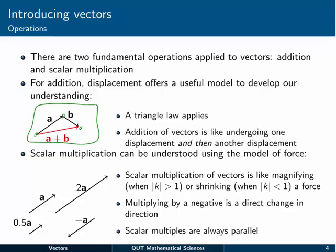A useful model for thinking about scalar multiplication is the model of force. Now, scalar multiplication of vectors is like magnifying or shrinking their magnitude, depending on what we multiply by. If we multiply a vector by a value k, which has a magnitude, or absolute value, bigger than 1, then we magnify the original vector. If the absolute value of k is less than 1, on the other hand, we shrink the original vector.